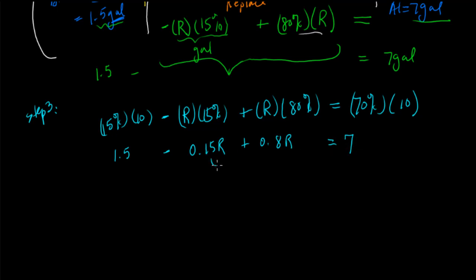And we ended up with 70%, much higher concentration than when we started. Numerically, we have 1.5 minus 0.15R plus 0.8R is equal to 7. I'm going to combine those two over here. Let's see, what do I have? 0.65. Let's do the math over here. So 0.8 minus 0.15. So I have 1.5 plus 0.65R equals to 7.